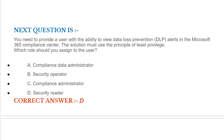Next question: You need to provide a user with the ability to view data loss prevention (DLP) alerts in the Microsoft 365 compliance center. The solution must use the principle of least privilege. Which role should you assign to the user? Option A: Compliance data administrator. Option B: Security operator. Option C: Compliance administrator. Option D: Security reader. Correct answer is Option D.